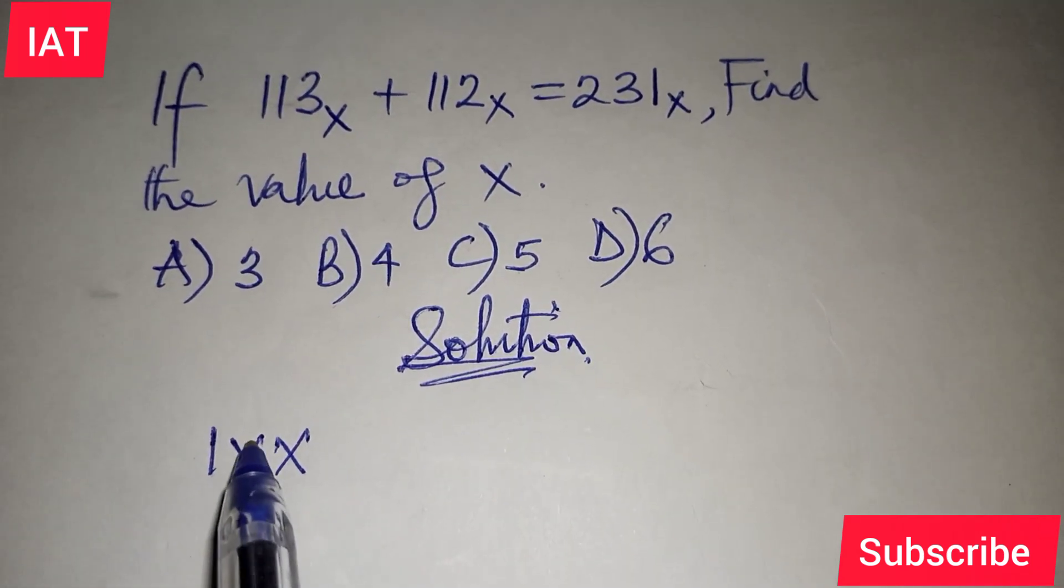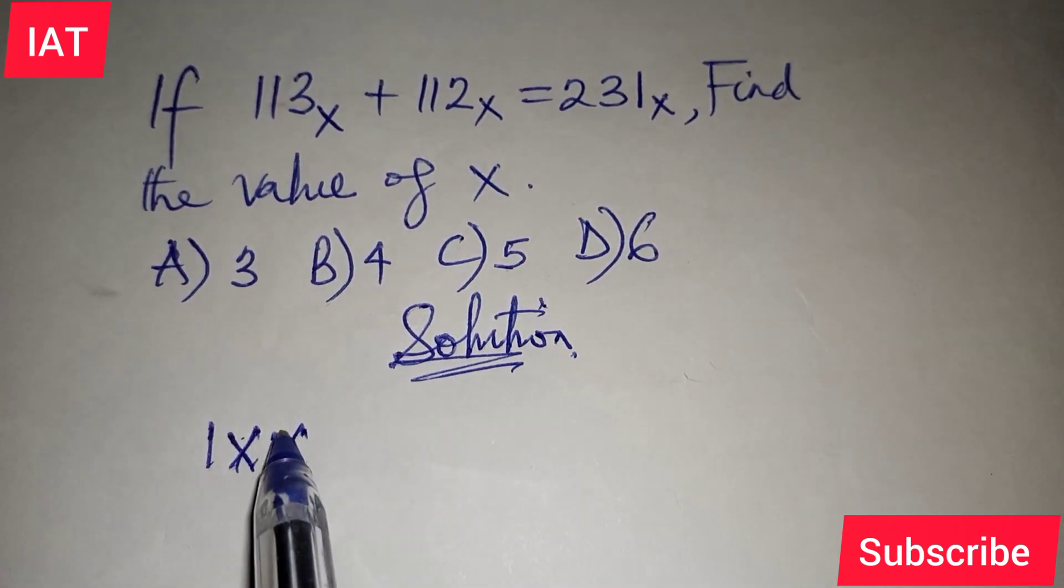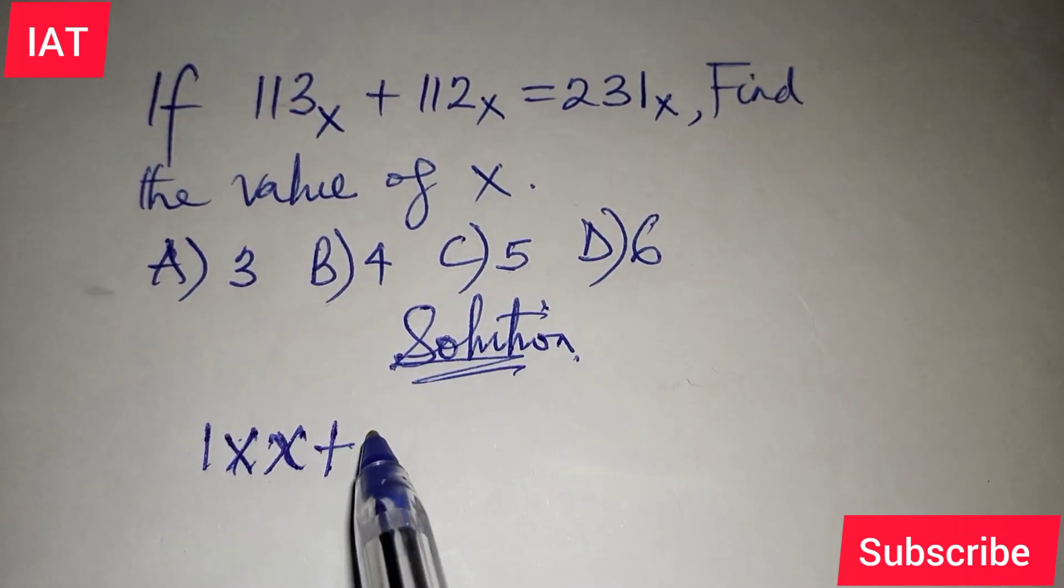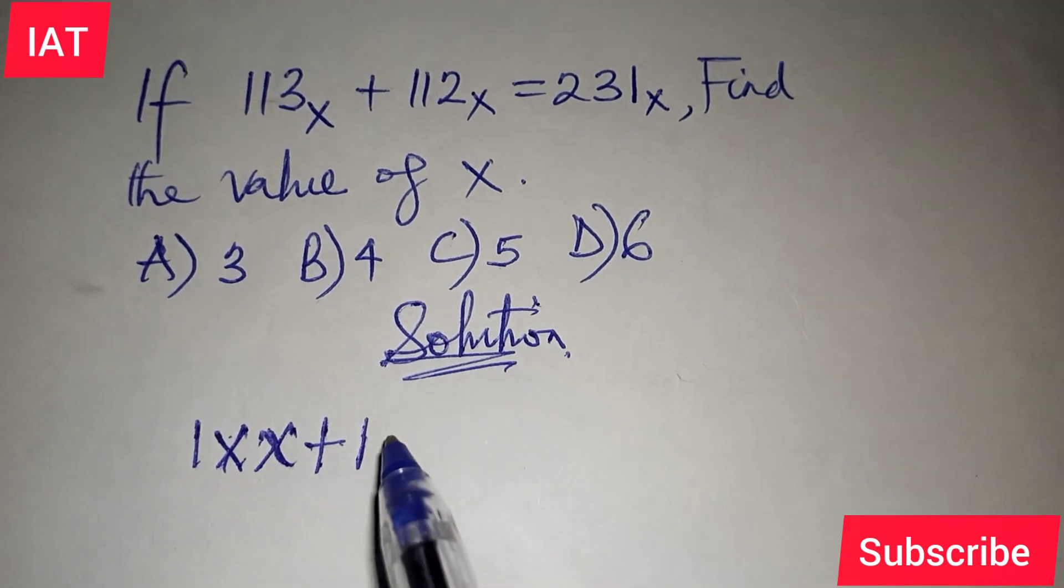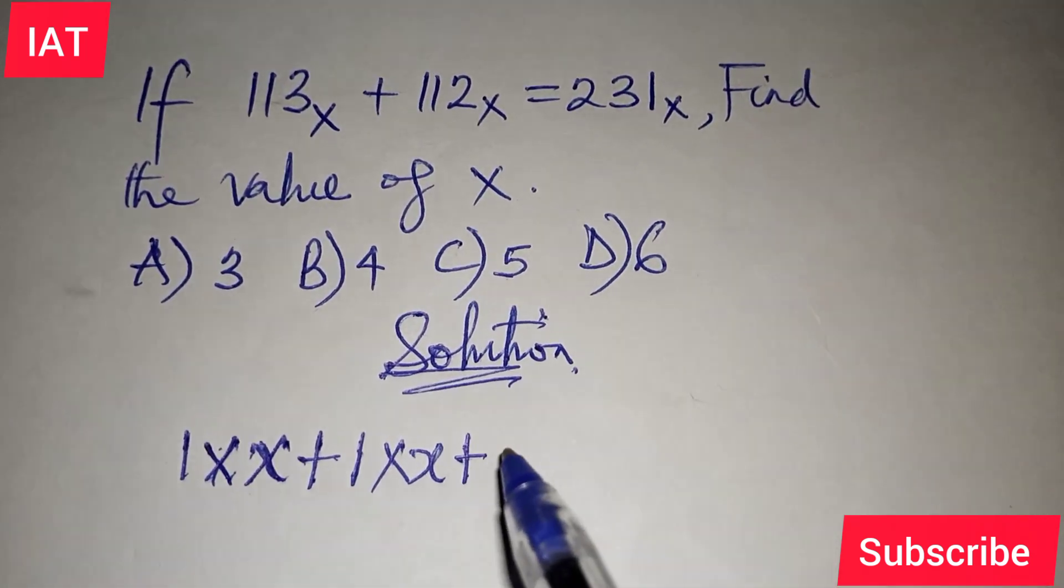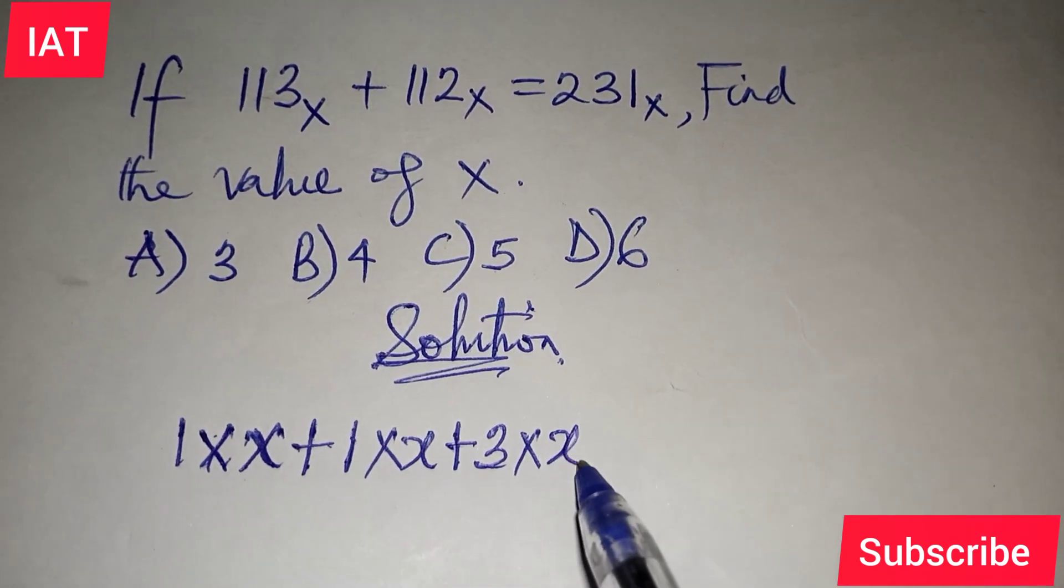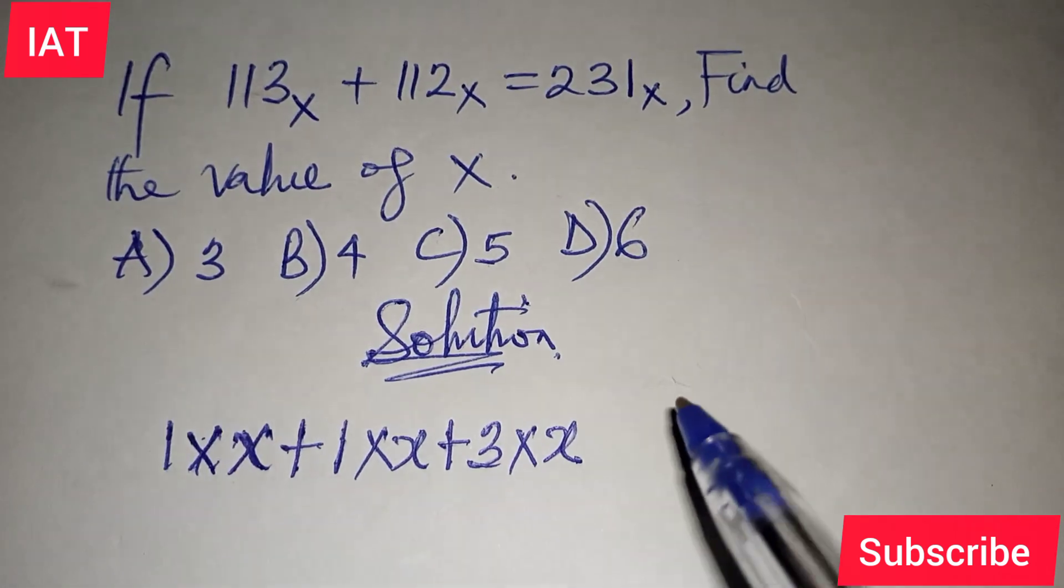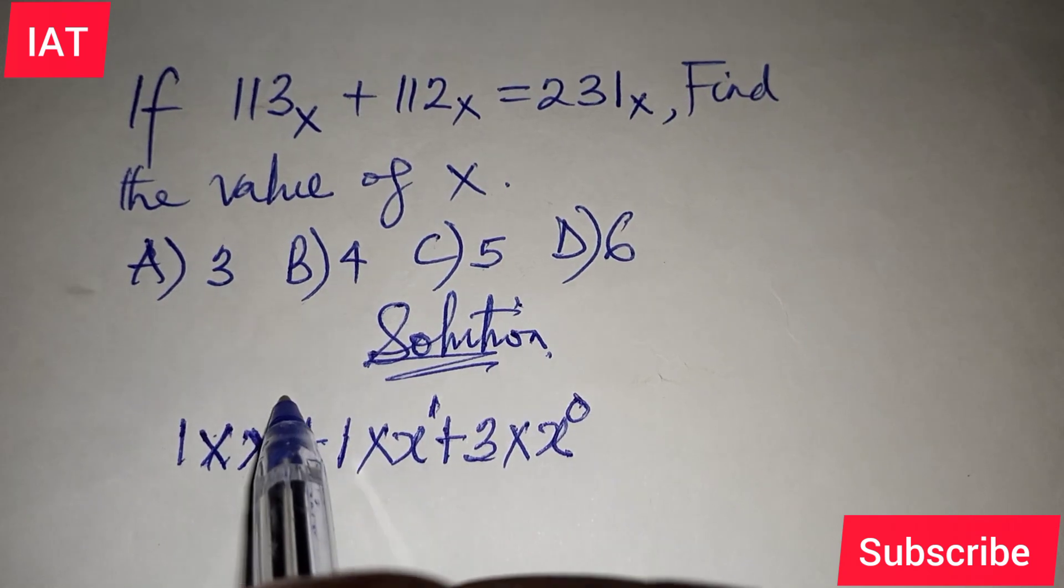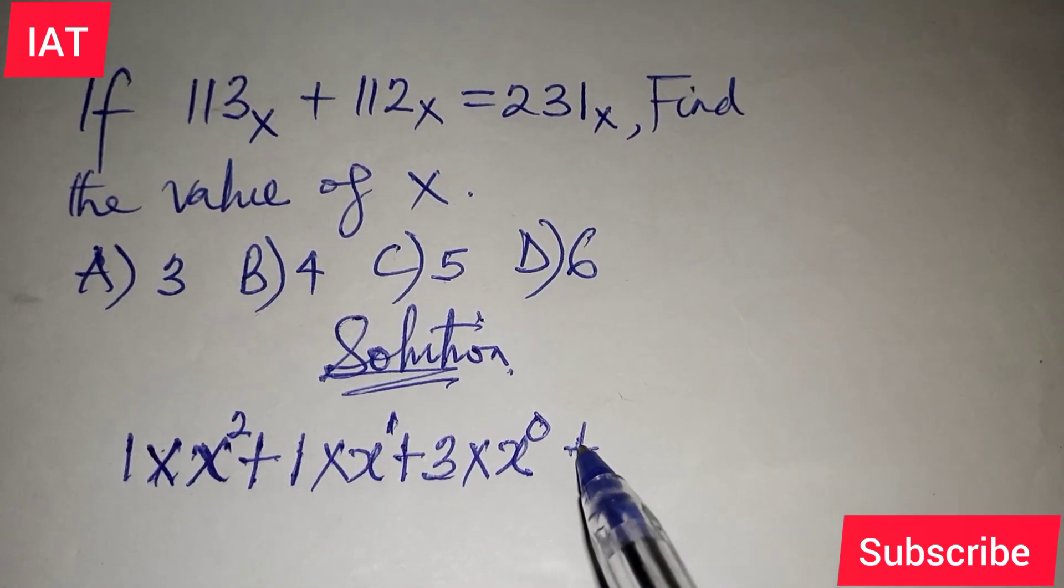I'll raise these to the power starting with 0, 1, 2. Then plus the second one I have: 1 multiplied by X plus 1 multiplied by X plus 2 multiplied by X, with powers 0, 1, and 2. This equals...